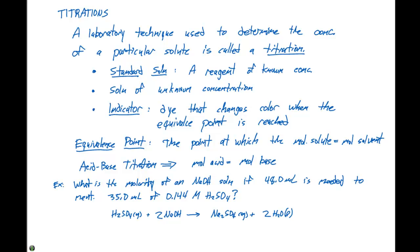The first thing that we're going to have to do is calculate the moles of H2SO4 that's required to reach the endpoint of this titration. So if we have 0.144 moles of H2SO4 per liter, which is our concentration, times the volume which is 0.0350 liters, our liters cancel out and that gives us 0.00504 moles of H2SO4.